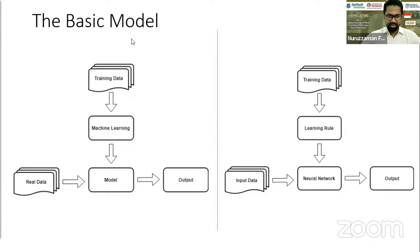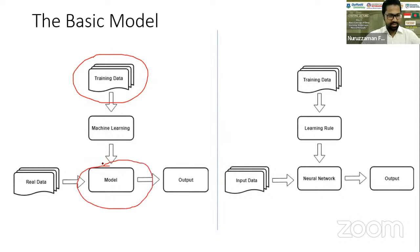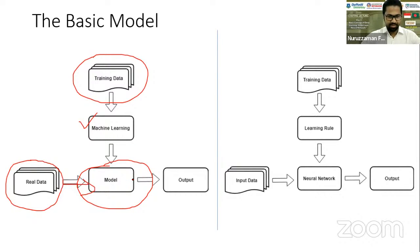I believe that you are all familiar with the basic machine learning model. In the basic machine learning model, we have training data. The training data is used to train a model using a machine learning algorithm. Once it is trained, we use some real-world data, it enters the model, and we test the model to get the output.